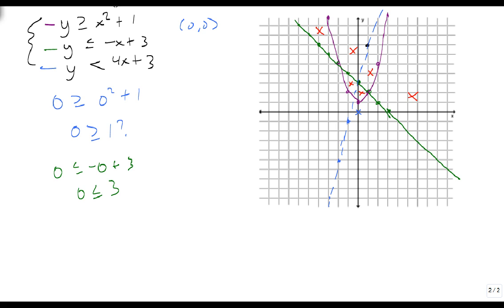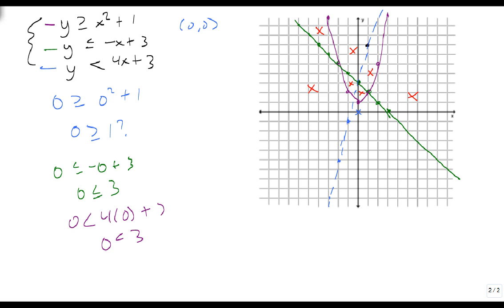And the last one is our blue line: is 0 less than 4 times 0 plus 3? 0 is less than 3, which is also true. So this side of the blue line gets shaded, ruling out the other regions. The only region that they all agree on is this one right here, and so we just shade this region and we have finished the problem.